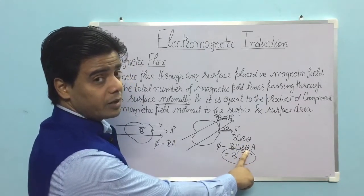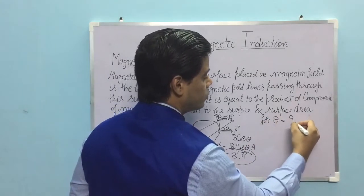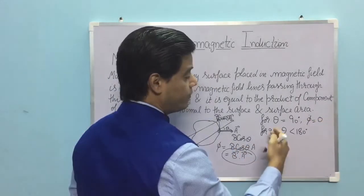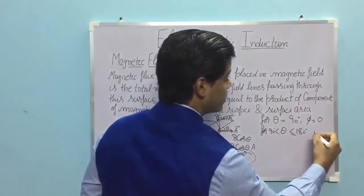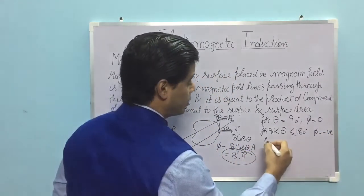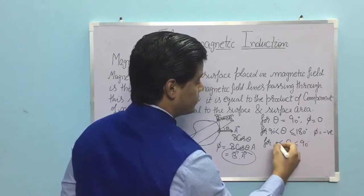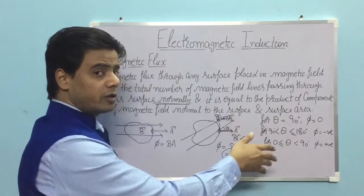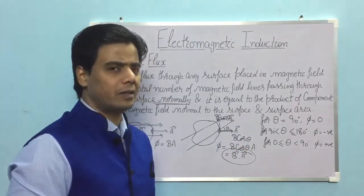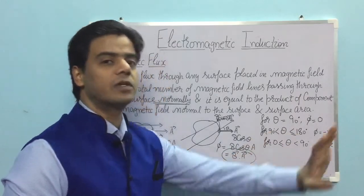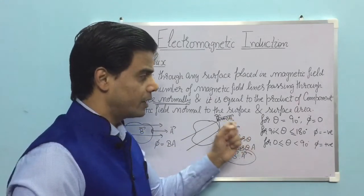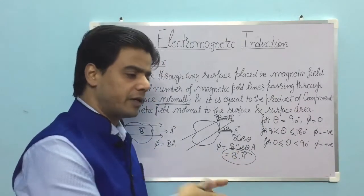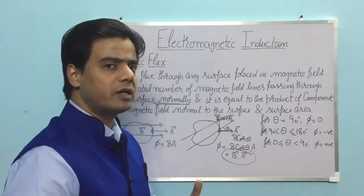But here this scalar quantity — magnetic flux — can be negative, positive, as well as zero, because it depends upon the angle between the magnetic field and the area vector. For theta exactly equal to 90°, flux is B·A·cos 90° = 0. For theta between 90° and 180°, flux is negative. For theta between 0° and 90°, flux is positive. Positive flux means magnetic field lines are coming out of the surface; negative means lines are going into the surface; zero means no lines pass through, or equal numbers enter and exit.